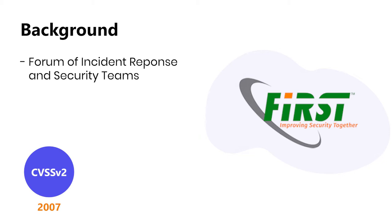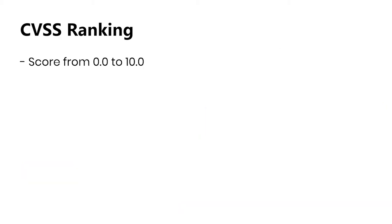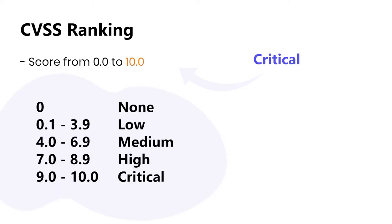Further development resulted in CVSS version 3 being released in 2015 and version 3.1 in 2019. CVSS ranks vulnerabilities with a score between 0 and 10, where 10 is the most critical. The other severity levels are categorized as shown.